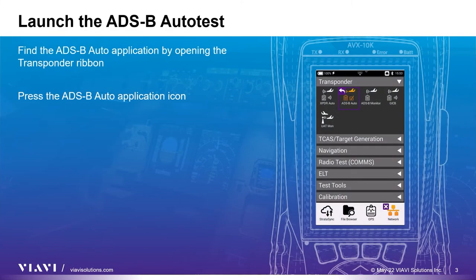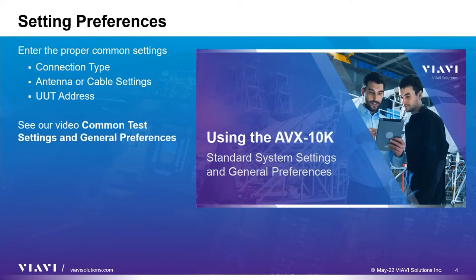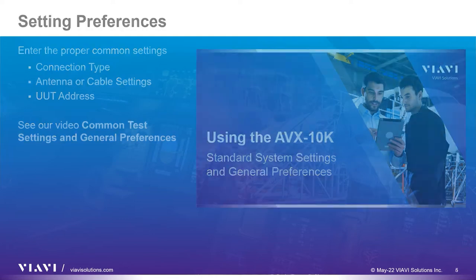After turning on your test set, open the transponder ribbon and select the ADSB auto application. All tests on the AVX-10K have a set of common preferences that need to be set before testing. Our video on common test settings and general preferences goes into greater detail.